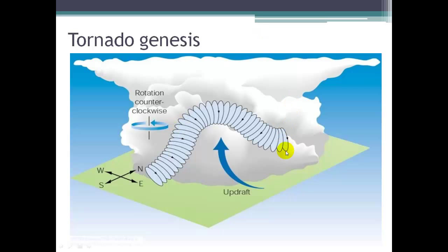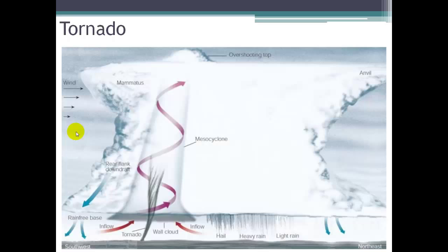When we get a big updraft meeting that spiral, it can push that spiral upwards, and we start to get a rotation — a counterclockwise rotation — and low pressure. These storms are associated with low pressure.